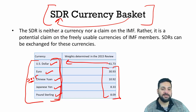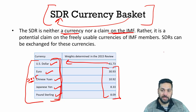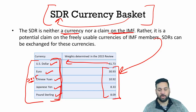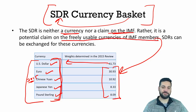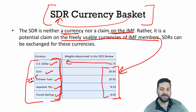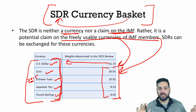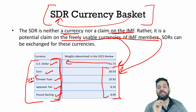SDR is not a proper currency, and there is no direct claim on the IMF. However, if you hold SDRs, you can make claims on the freely usable currencies — US dollar, euro, Chinese yuan, Japanese yen, or pound sterling. So SDR is a potential claim on the freely usable currencies of IMF members, which are commonly used in international trade.